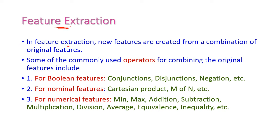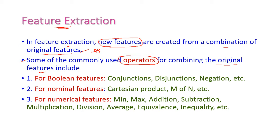Feature extraction means creating new features from the combination of existing features — that is, the original features in the dataset. By using some operators, we can combine the original features to create new features. That is called feature extraction.